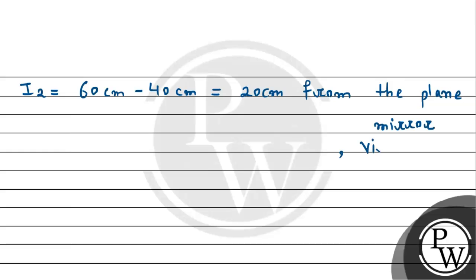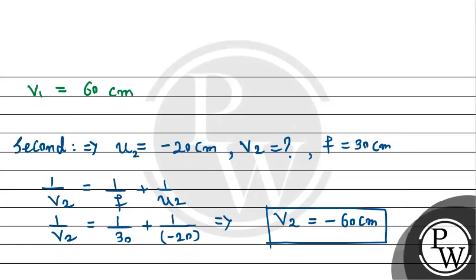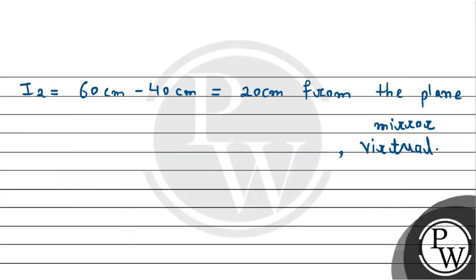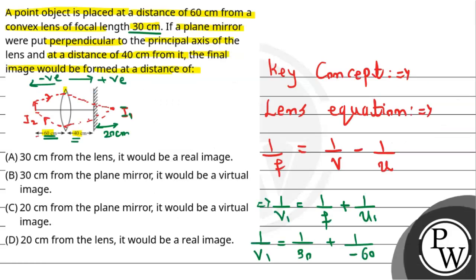And the nature of image will be virtual. Virtual, because you see v2 = -60 cm. So therefore, according to this, trying to match with the given option, then 20 cm from the plane mirror and it will be a virtual image. So option C is correct. So this is the required solution. I hope you understand well. Best of luck. Thank you.